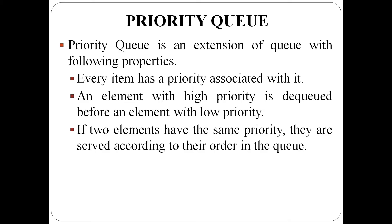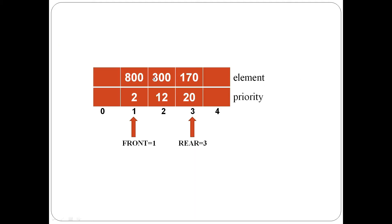An element with high priority is dequeued before an element with low priority — the highest priority element is dequeued first. If two elements have the same priority, then they are served according to their order in the queue.